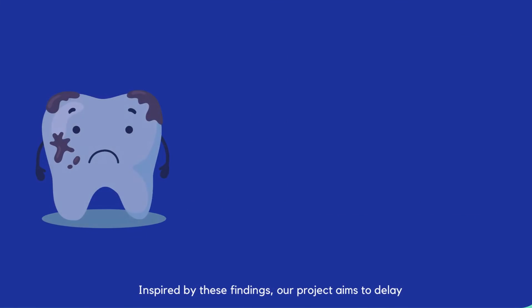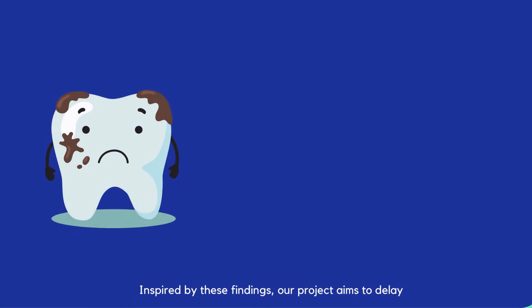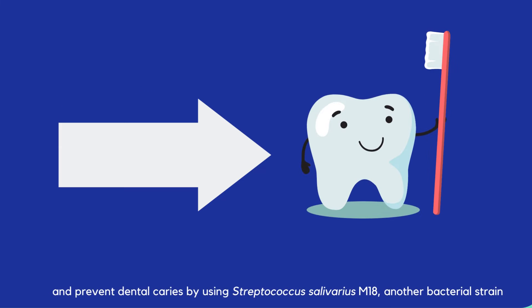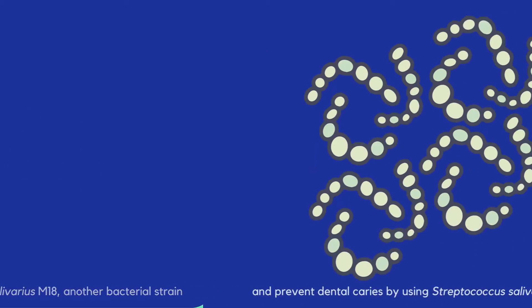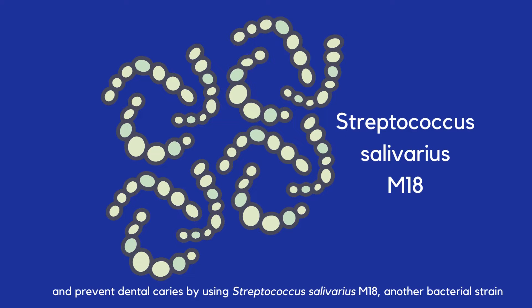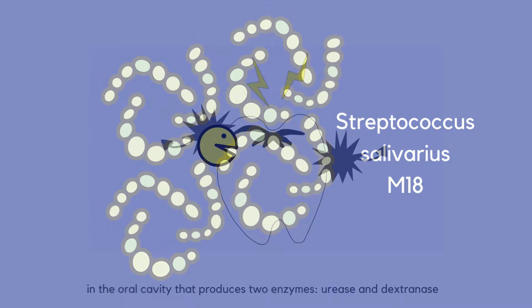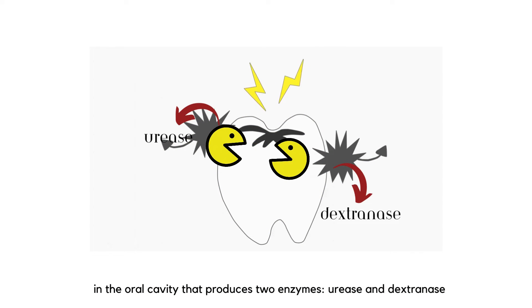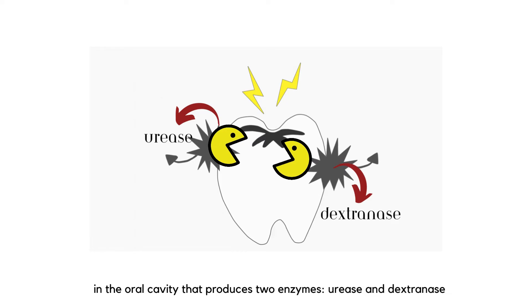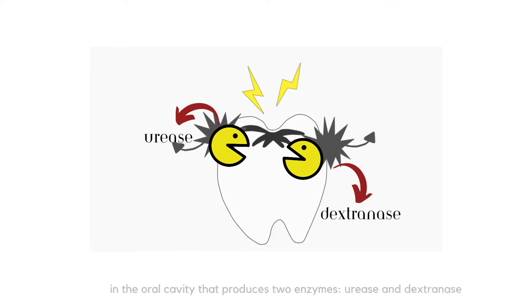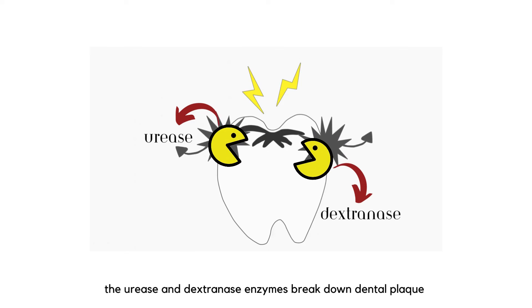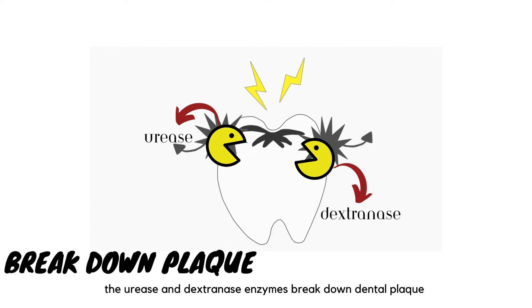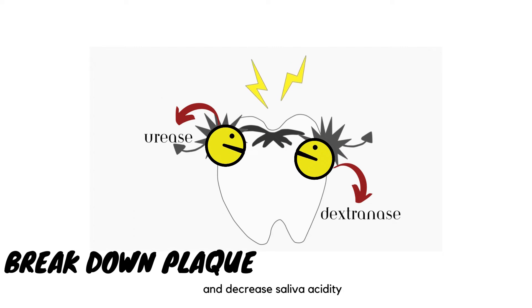Inspired by these findings, our project aims to delay and prevent dental caries by using Streptococcus salivarius M18, another bacterial strain in the oral cavity that produces two enzymes, urease and dextranase. The urease and dextranase enzymes break down dental plaque and decrease saliva acidity.